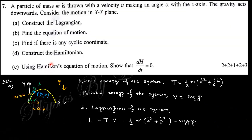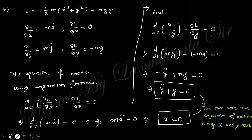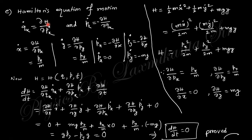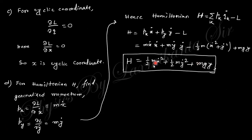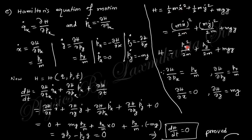Using Hamilton's equations of motion: q̇k = ∂H/∂pk and ṗk = −∂H/∂qk. Since there are two coordinates x and y, we get ẋ = ∂H/∂px, ẏ = ∂H/∂py, ṗx = −∂H/∂x, and ṗy = −∂H/∂y. The Hamiltonian is rewritten in momentum space, and we find ∂H/∂px, ∂H/∂py, ∂H/∂x, and ∂H/∂y, substituting to obtain four expressions.